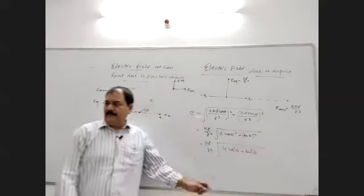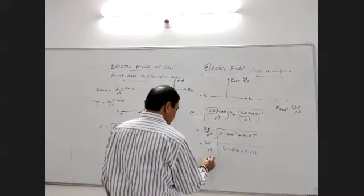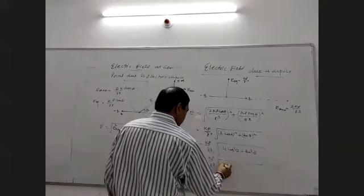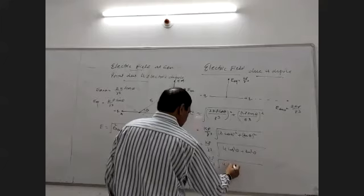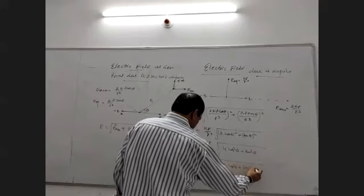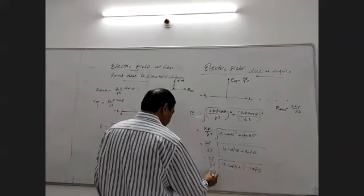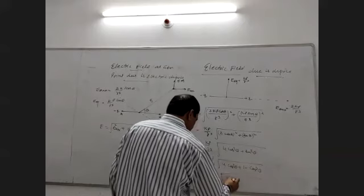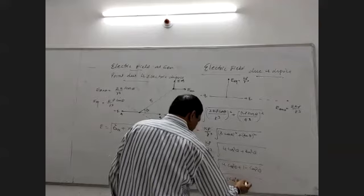Continuing: kp upon r cubed, root of 4cos²θ plus 1 minus cos²θ, which gives kp upon r cubed times the root of 1 plus 3cos²θ.